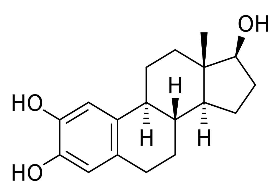A catechol estrogen is a steroidal estrogen that contains catechol — 1,2-dihydroxybenzene — within its structure. The catechol estrogens are endogenous metabolites of estradiol and estrone and include the following compounds.